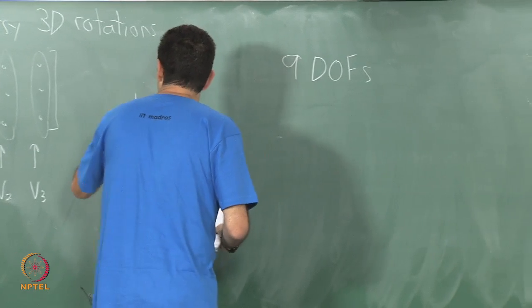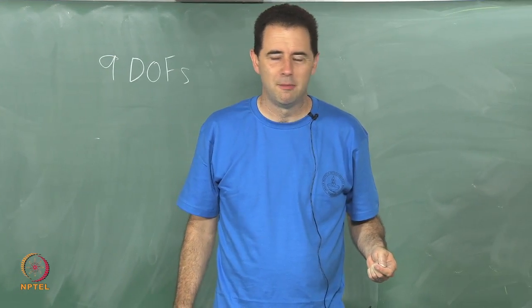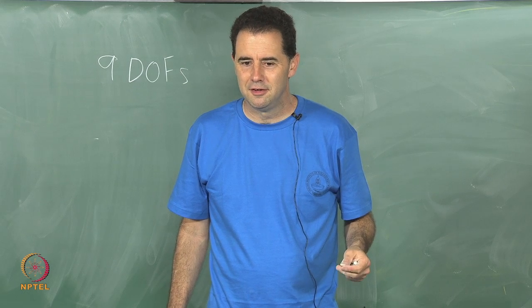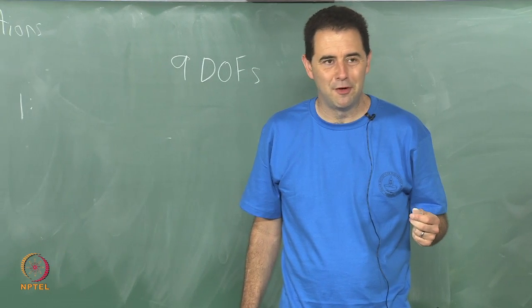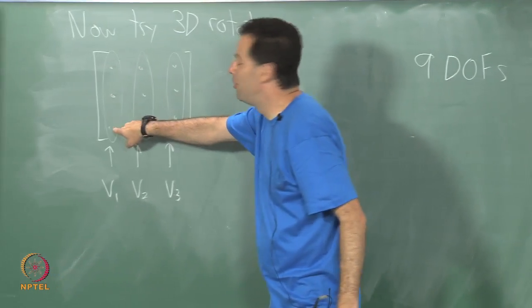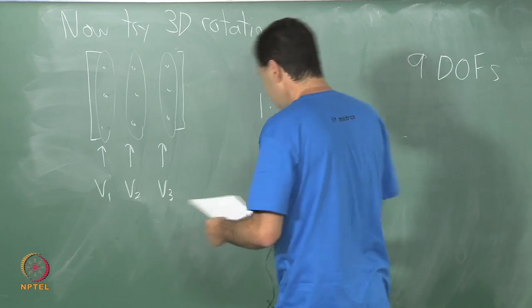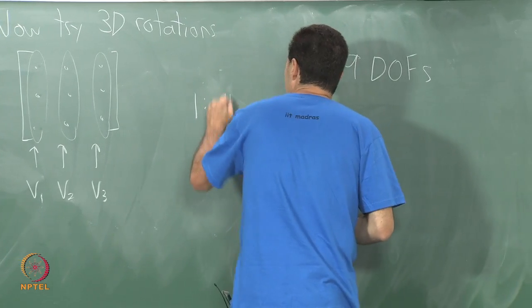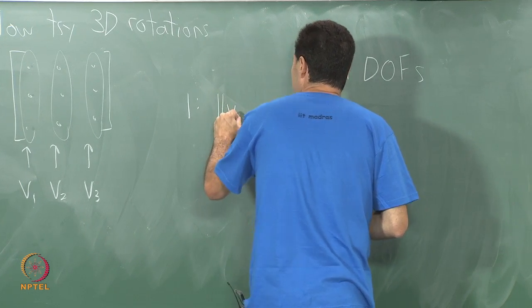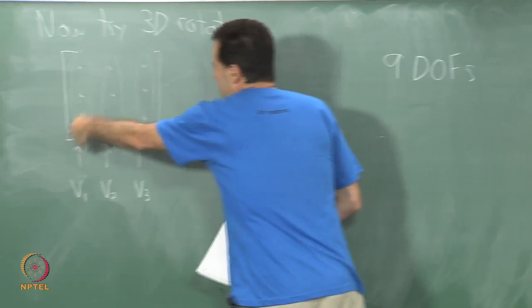Constraint number 1, what was constraint number 1, anybody remember? The lengths of the vector should be 1, right. If I take the, if I square each of the components and add them up, I should get equal to 1. I guess I can just write that using norm notation from linear algebra, but if you do not remember that anymore, just square each element, add them up.